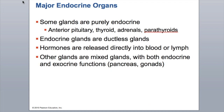Some glands are purely endocrine: the anterior pituitary, thyroid, adrenals, and parathyroids. Your endocrine glands are ductless glands — the hormones are released directly into the blood or lymph immediately. All other glands are mixed glands, meaning they have both endocrine and exocrine functions, such as your pancreas and your gonads.